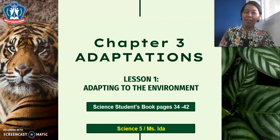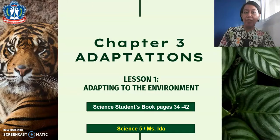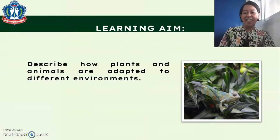Hello, P5 students! Welcome back to our science class with Ms. Ida. We are now on Chapter 3, Adaptations. For this video lesson, we're going to learn Lesson 1, Adapting to the Environment. Let's get our science students book and open it on pages 34 to 42 while watching this video. So come on, let's get started! Our learning aim is to describe how plants and animals are adapted to different environments.